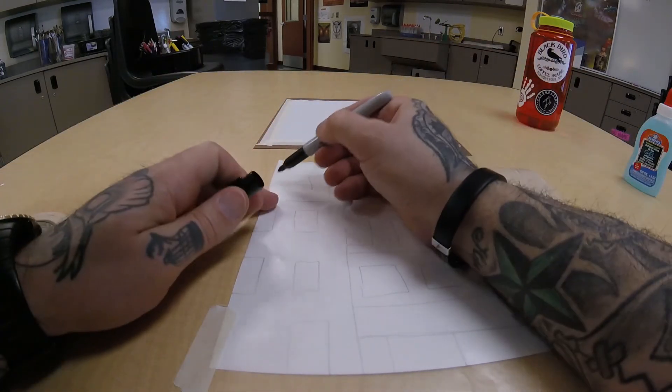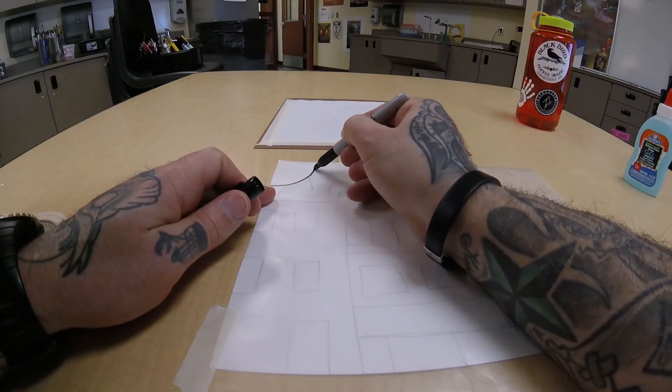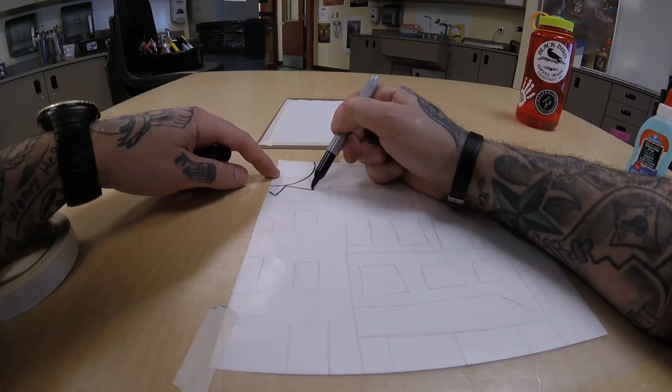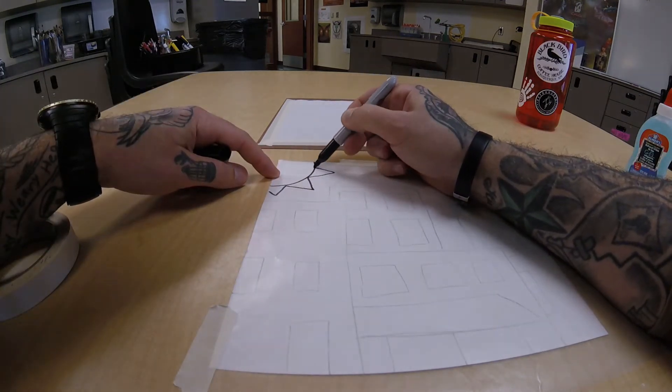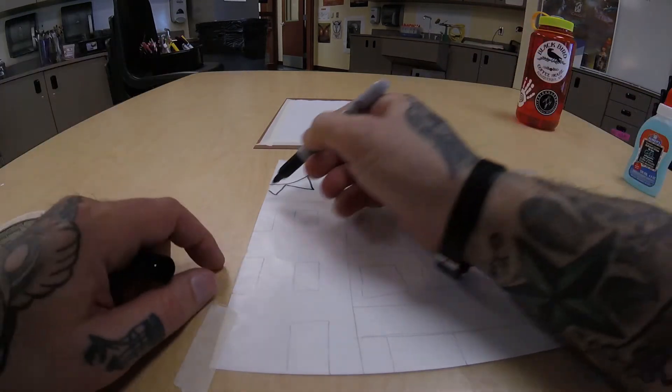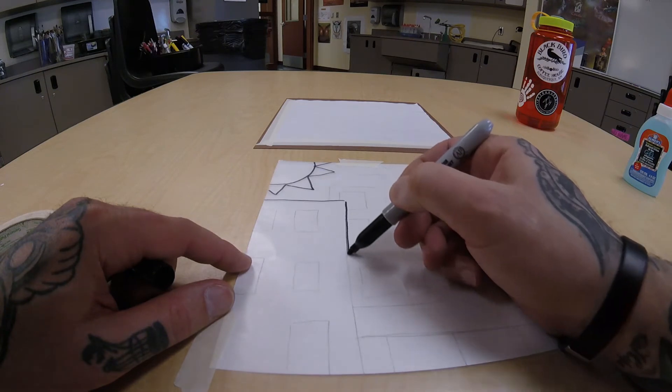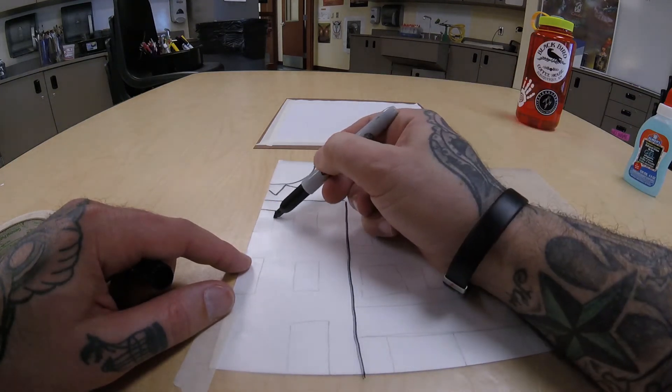Now you're going to use a permanent marker to trace. As you're tracing, make sure you don't touch that permanent marker because it does take a few seconds to dry, and if you touch it, it's going to smear. Do your best to retrace all of your lines with black marker.